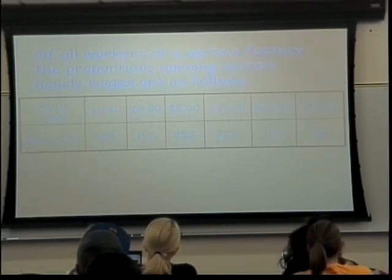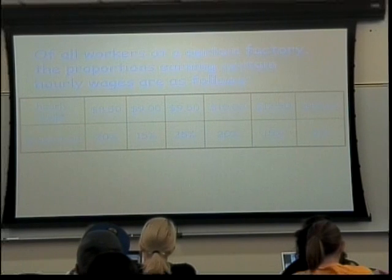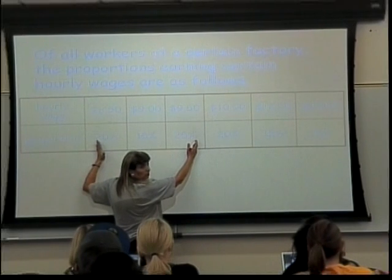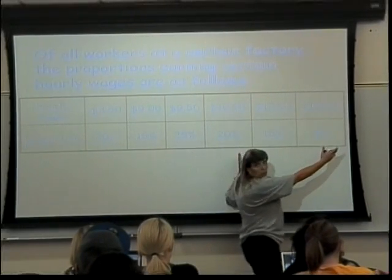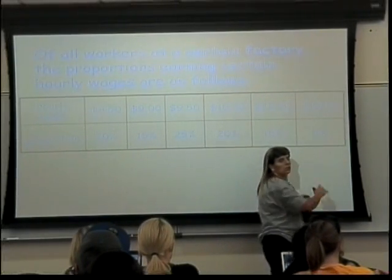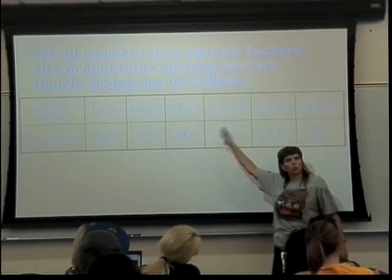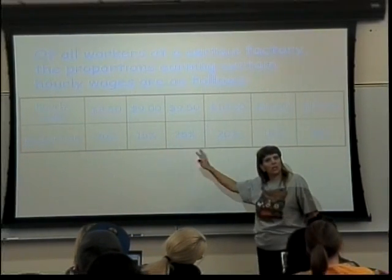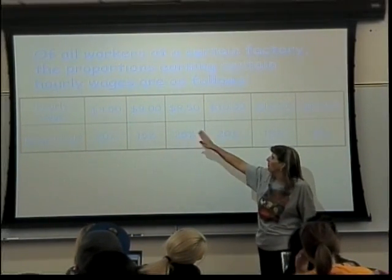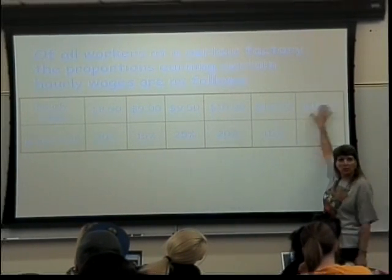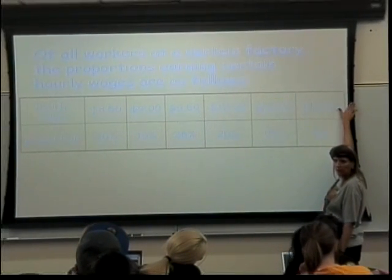Notice this is not just taking the numbers and averaging them. This takes into account that there are more people at the lower end. That's why we come out with a number that's toward the lower end, because there are more people making $8.50 and $9.50 than there are making $10, $12.50, and $15.